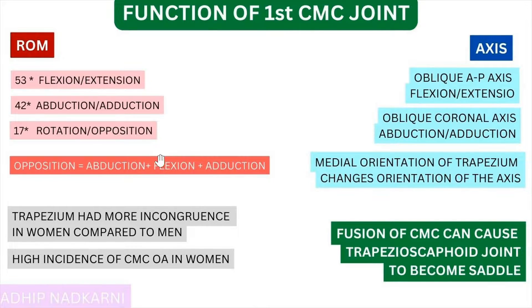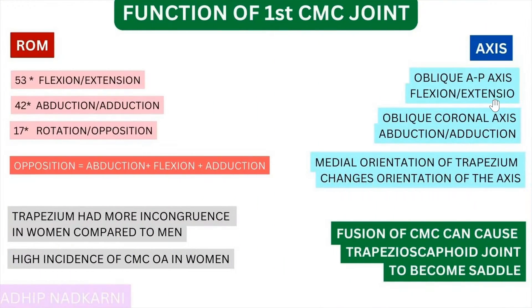The movement is based on the axis. There is an oblique anteroposterior axis for flexion and extension. Normally, the anteroposterior axis would produce abduction/adduction in the frontal plane, but at the CMC joint this same movement is called flexion and extension. Conversely, what would normally be flexion and extension in the sagittal plane is called abduction and adduction here. This happens because the medial orientation of the trapezium changes the orientation of the axes.